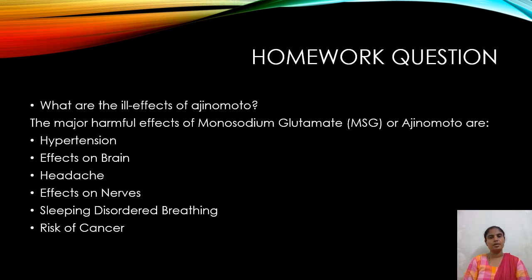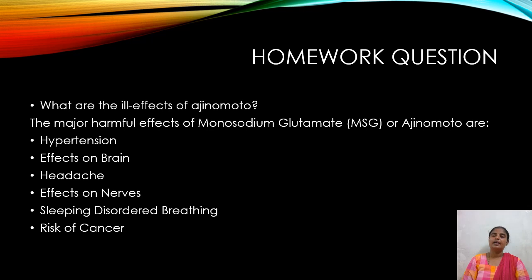Our homework question was: what are the ill effects of Ajinomoto? Ajinomoto is a local name; chemically it is called monosodium glutamate, or MSG. The effects of MSG on the human body include headache, hypertension, effects on the brain and nerves, sleep disorder, and it can also induce cancer — particularly colon cancer, where digestion becomes very problematic and it affects the intestines. It is always better to avoid food products containing MSG or Ajinomoto, as it is really very harmful.